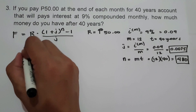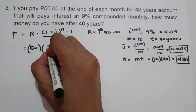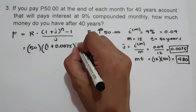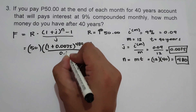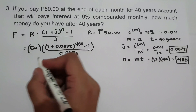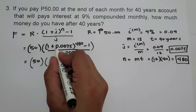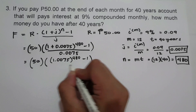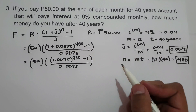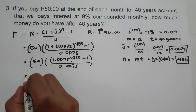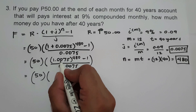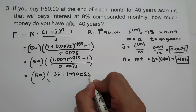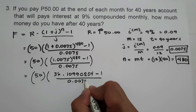Substituting into the formula: R equals 50, multiplied by the quantity of 1 plus j (0.0075) raised to n (480), minus 1, all over 0.0075. Adding inside: 1 plus 0.0075 equals 1.0075, raised to 480, minus 1, all over 0.0075. Raising 1.0075 to the power of 480 gives 36.10990204. So we have 50 multiplied by 36.10990204 minus 1, all over 0.0075.